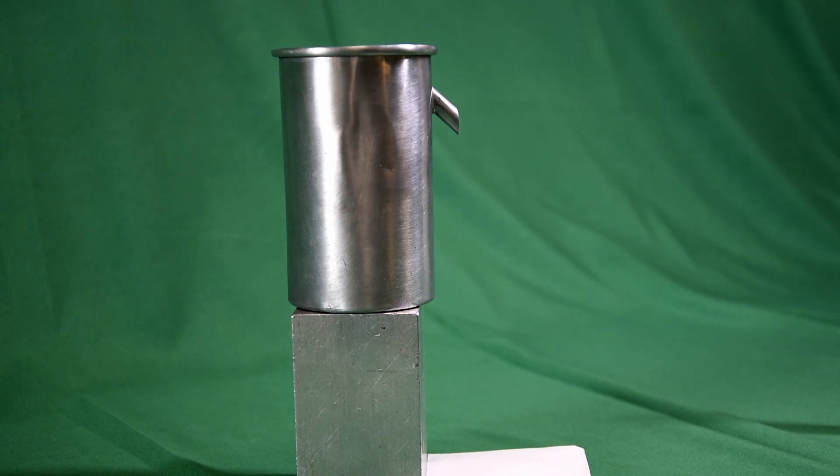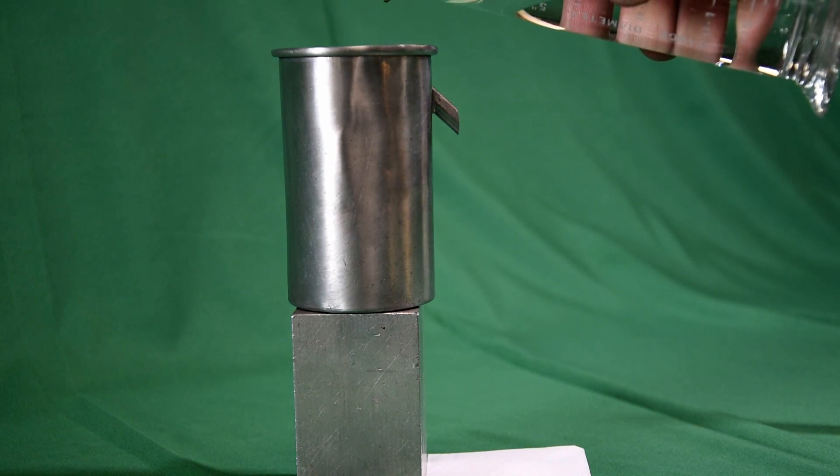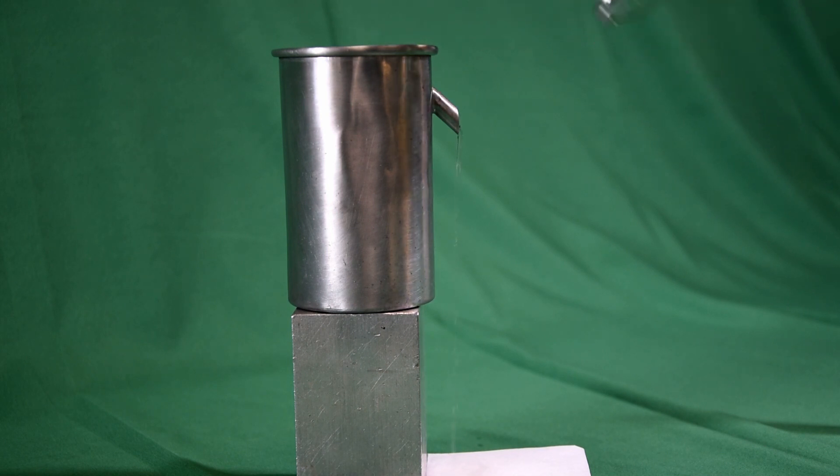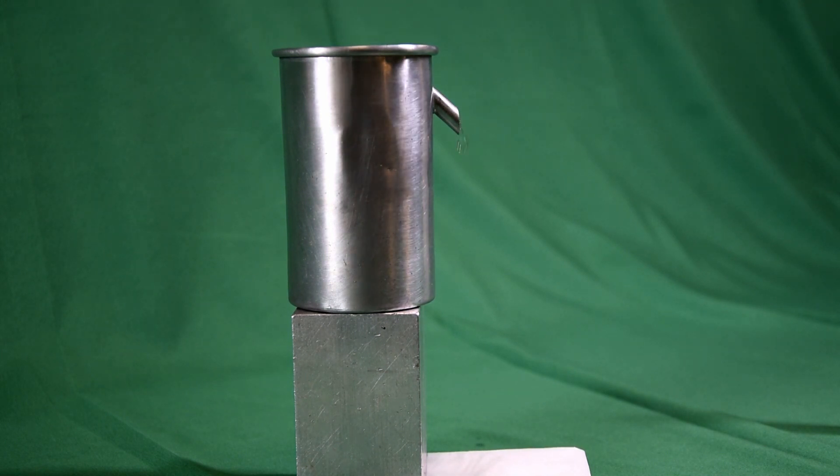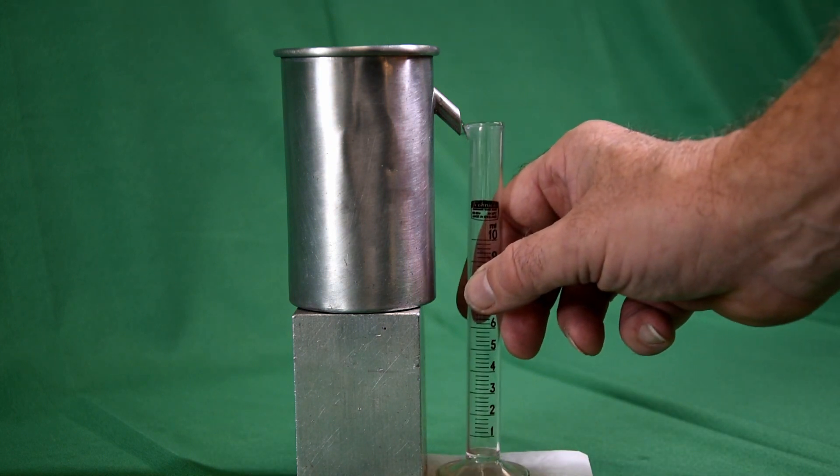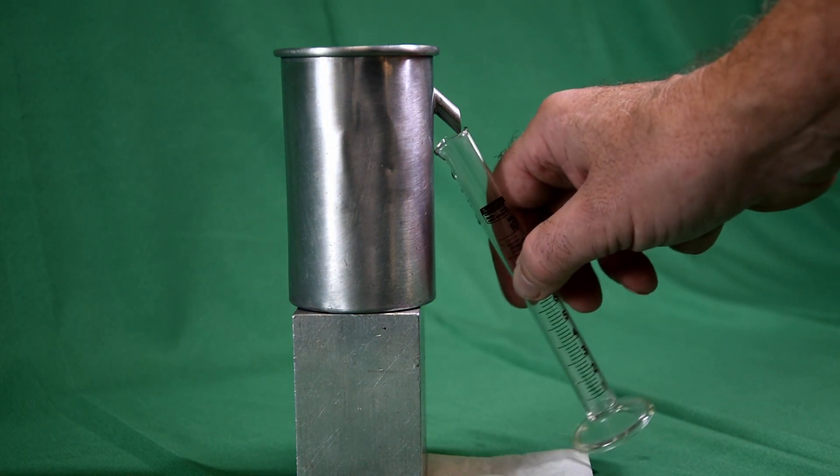A displacement can, otherwise known as a Eureka can, is filled to overflowing with water, and the excess is allowed to drip out.